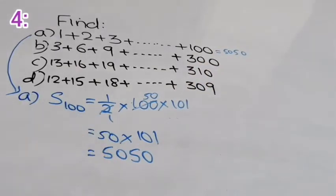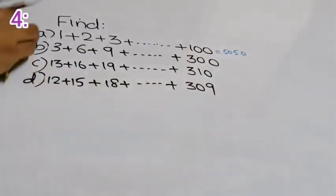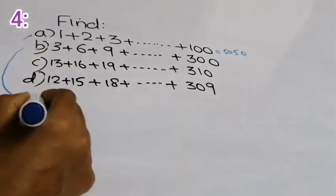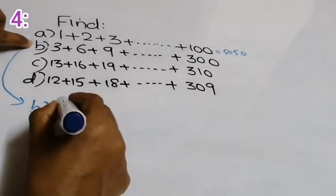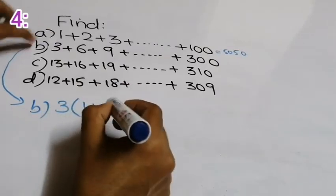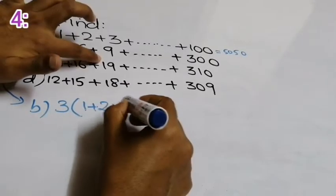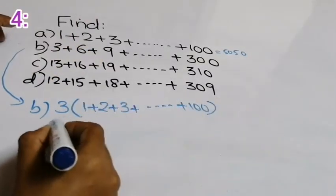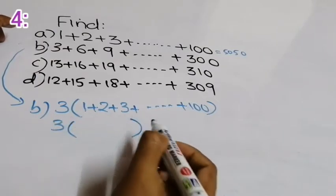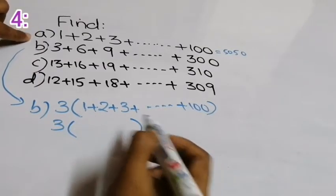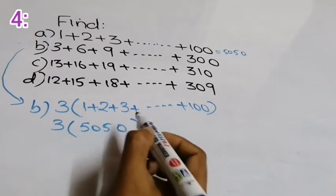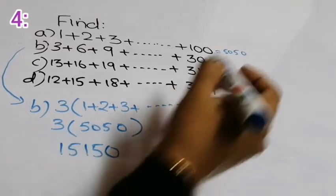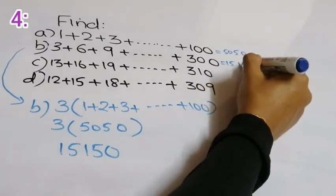Part B: 3 plus 6 plus 9 up to 300. These are multiples of 3, so we take 3 outside: 3 times (1 plus 2 plus 3 up to 100). From part A, the sum of 1 to 100 is 5,050. So the answer is 3 times 5,050 equals 15,150.